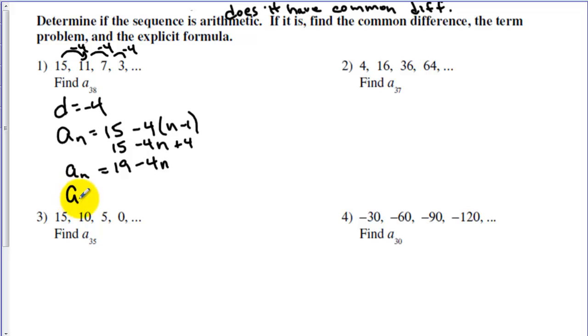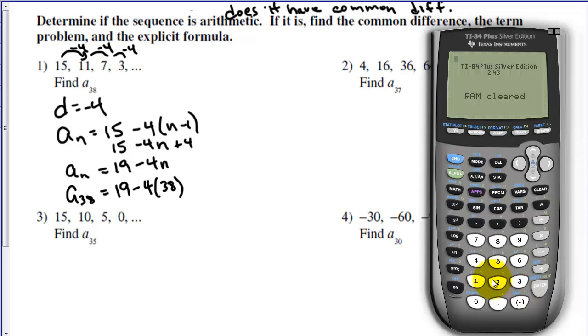Now we want to find a sub 38. We are going to put 38 in for n. I've popped up a calculator here so that we can calculate our number. And we get negative 133. So if we continue this sequence out until we get to the 38th term, it would be that number.